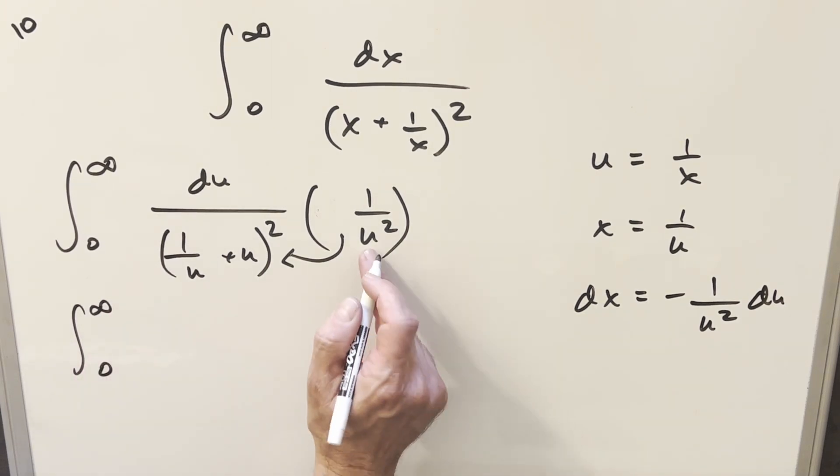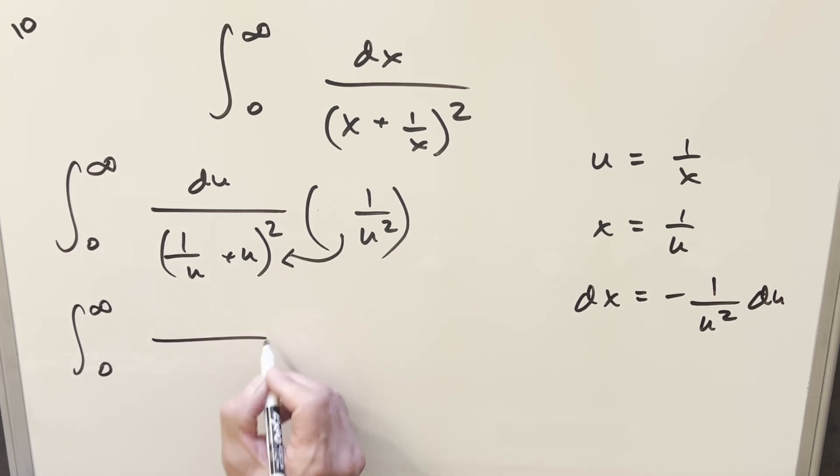so when we do this, I think I'll reorder it. So here u times u is going to give me u squared. Here u times 1 over u, that's just going to be a plus 1. And then we have our du in the numerator. And then one last thing,